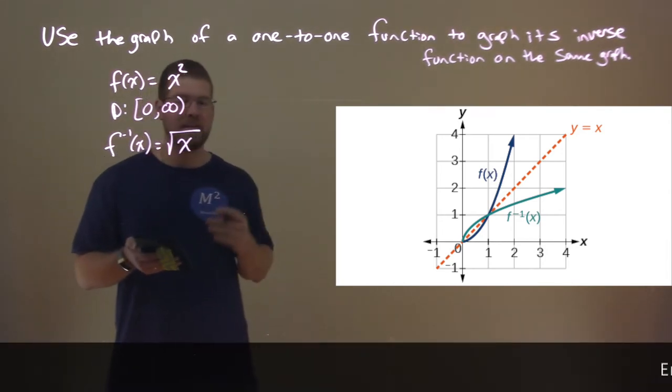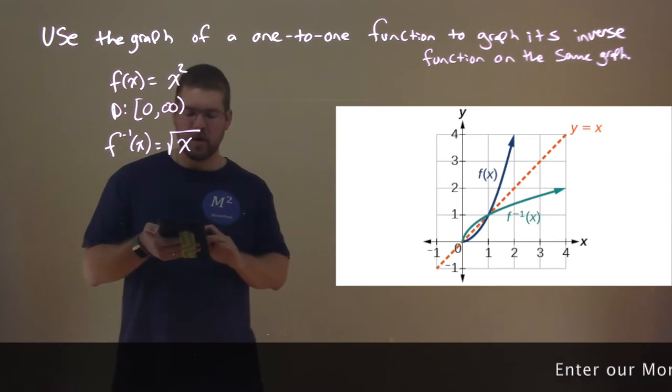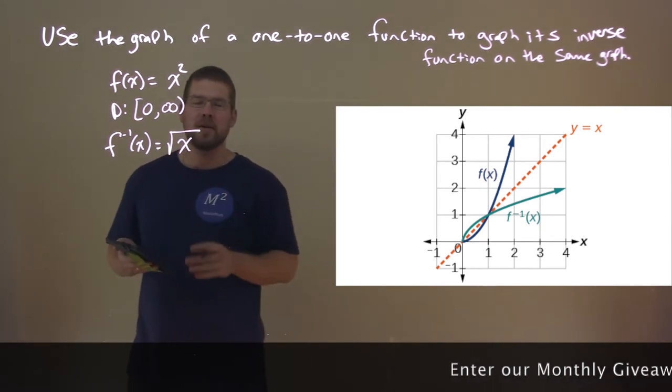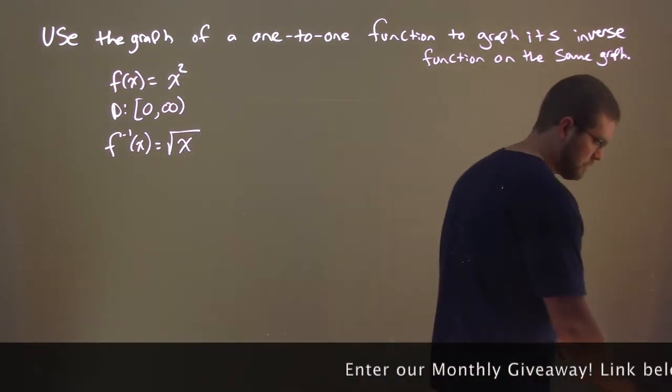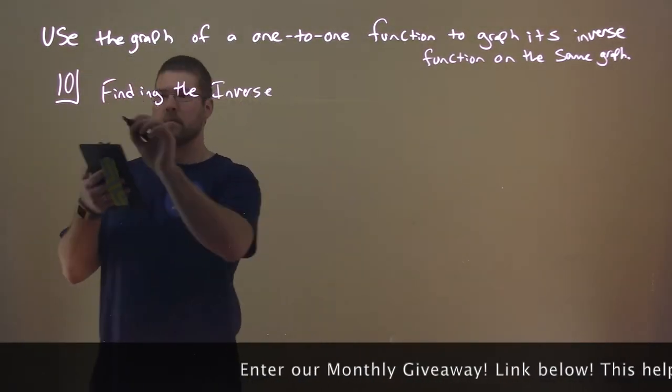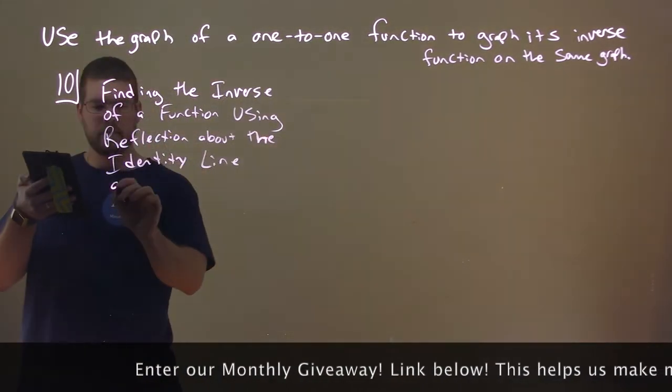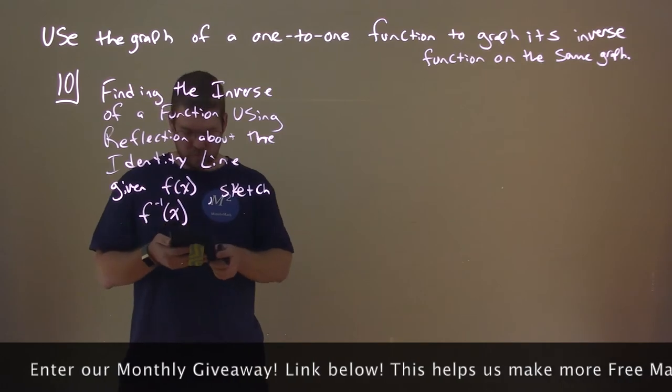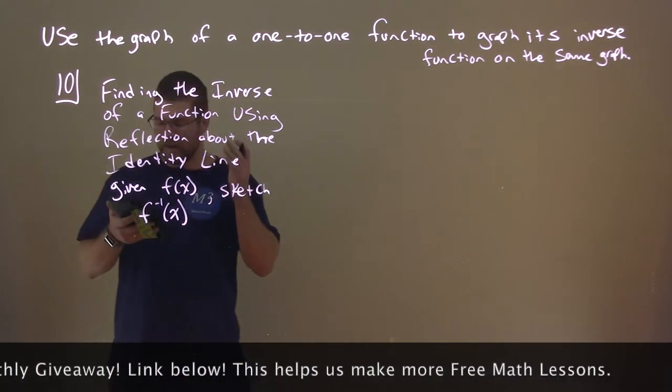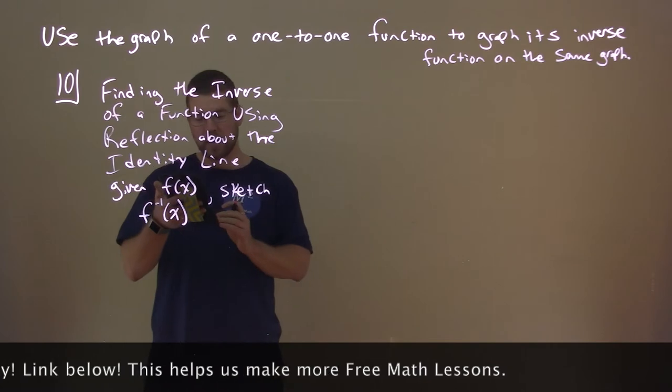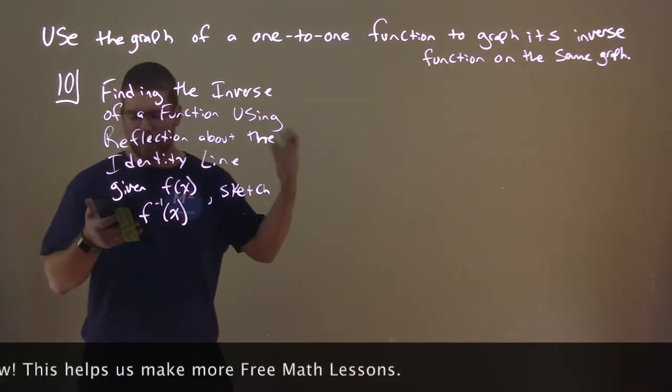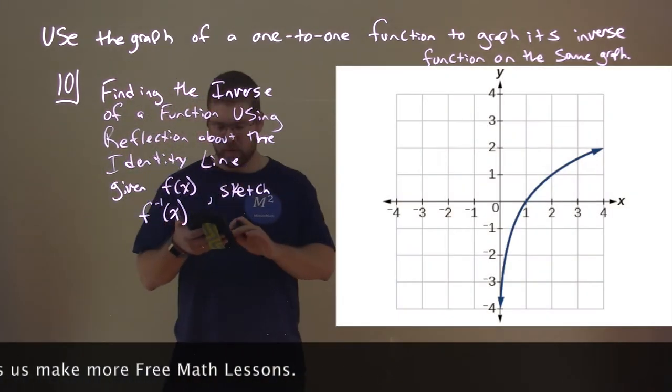F inverse of x is that square root of x. All right. So, let me erase this, and we'll go into the next part here. Okay. We're finding the inverse of a function using reflection about the identity line. We're given this graph of f of x here.